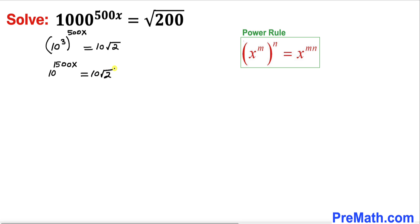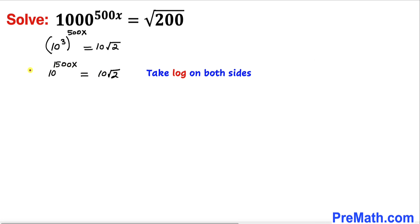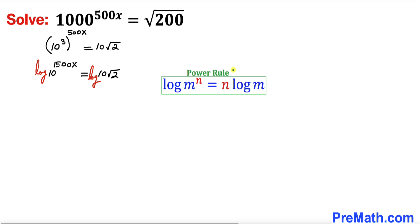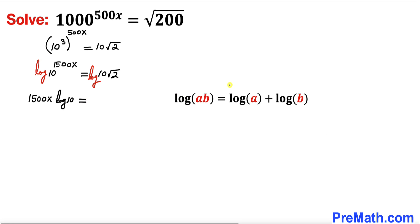Now let's take log on both sides — log on the left hand side and log on the right hand side as well. Applying the power rule of logarithms on the left hand side, the exponent 1500x can be moved to the front, so the left hand side becomes 1500x times log of 10.